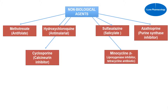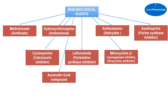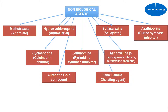Minocycline is a 5-lipoxygenase inhibitor and also belongs to the tetracycline group of antibiotics. We have leflunomide, which is a pyrimidine synthase inhibitor. Auranofin is a gold compound. Next we have penicillamine, which is a chelating agent.